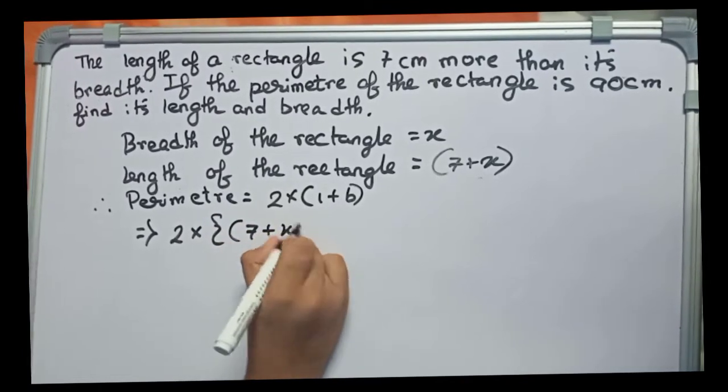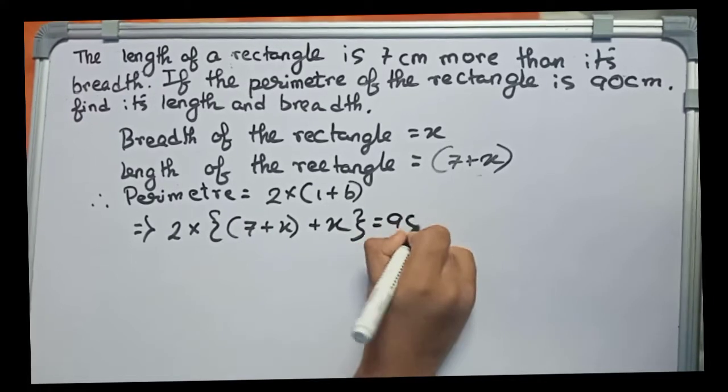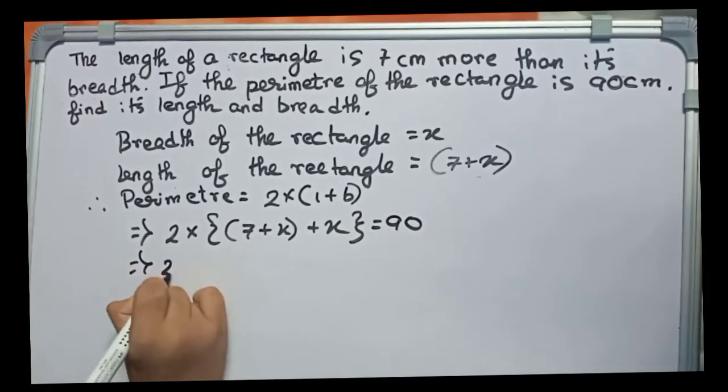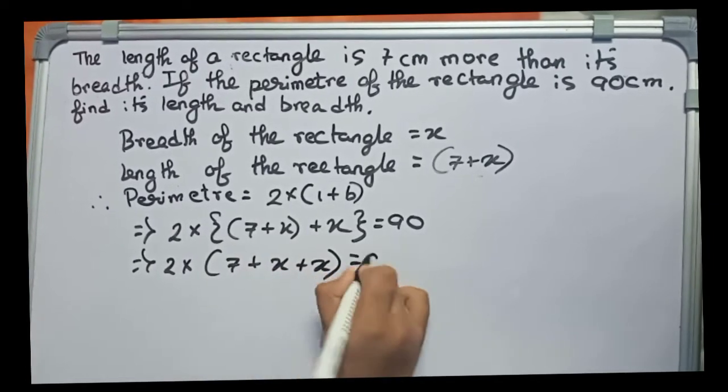It will become 2 into length, that is 7 plus x, plus x equals 90. Now you solve it: 2 into 7 plus x plus x equals 90.